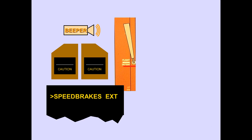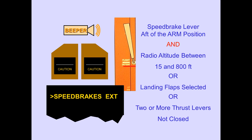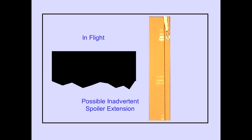The ICAST warning message 'Configuration Spoilers' is displayed if the speed brake lever is not in the down position and thrust levers two or three are advanced to the takeoff position. In flight, the ICAST advisory message 'speed brake auto' indicates a fault in the automatic speed brake system. Inadvertent spoiler extension may occur with the speed brake lever in the arm position.